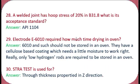Question 28: A welded joint has hoop stress of 20 percent in B31.8 — what is its acceptance standard? The answer is API 1104. Question 30: Electrode E6010 — how much time is required for drying in an oven? The answer is that E6010 should not be stored in an oven. E6010 is not a low-hydrogen electrode; it has a cellulosic coating which needs a little moisture to work. Only low-hydrogen electrodes are required to be stored in an oven.